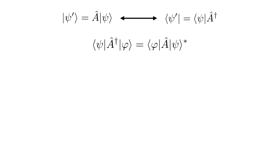Let's start with a refresher of operators and their adjoints. An operator A is an object that acts on a ket |ψ⟩ and gives another ket |ψ'⟩. The corresponding expression in the dual space tells us that the adjoint operator A† is the one that acts on the corresponding bra ⟨ψ| and gives the corresponding bra ⟨ψ'|. There is a video in the description where I introduce the idea of operators in quantum mechanics, so check it out if you haven't yet.